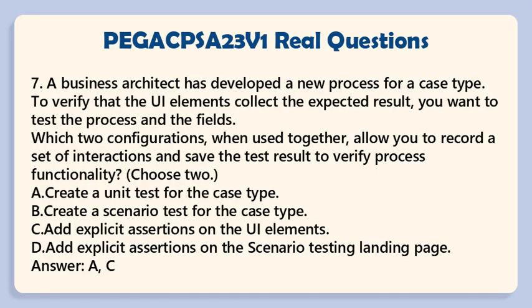Question 7: A business architect has developed a new process for a case type. To verify that the UI elements collect the expected result, you want to test the process and the fields. Which two configurations, when used together, allow you to record a set of interactions and save the test result to verify process functionality? Choose two. a. Create a unit test for the case type. b. Create a scenario test for the case type. c. Add explicit assertions on the UI elements. d. Add explicit assertions on the scenario testing landing page. Answer: b, c.